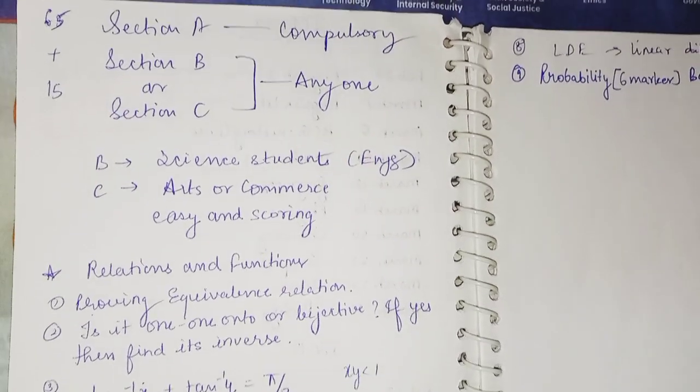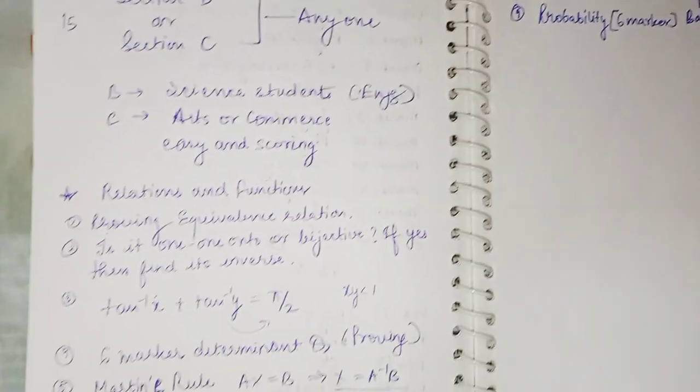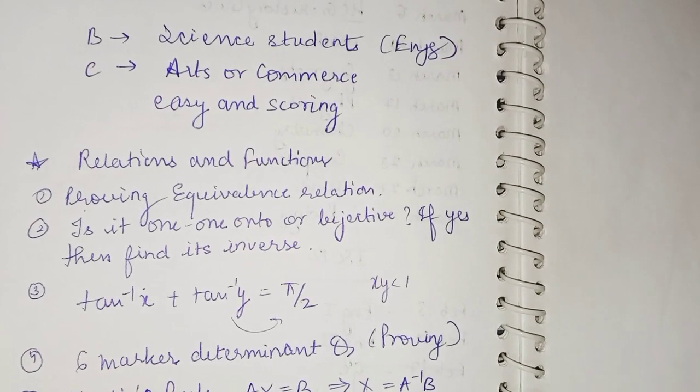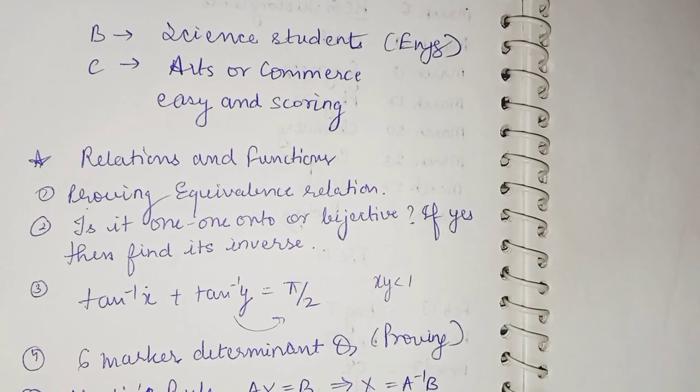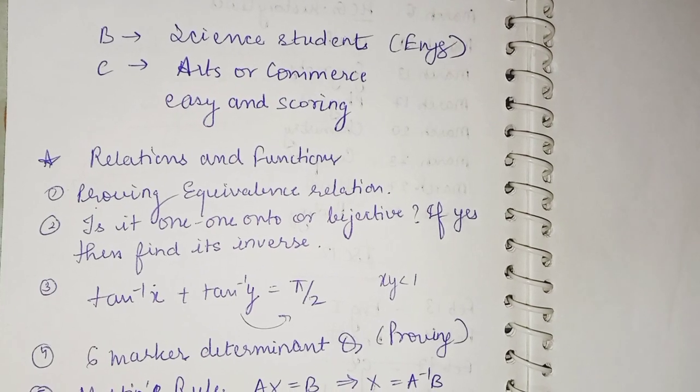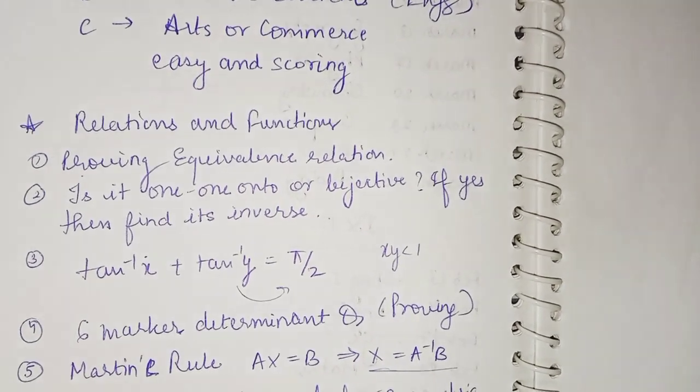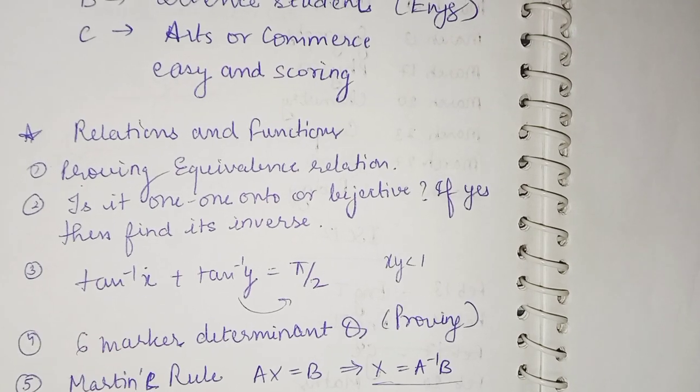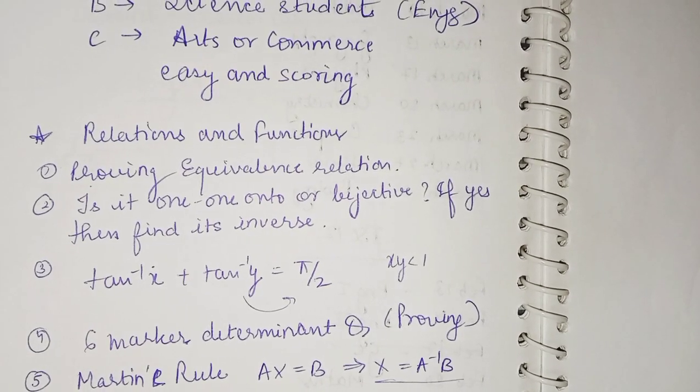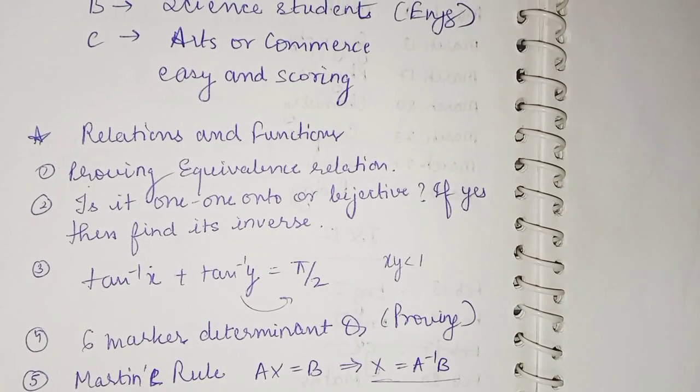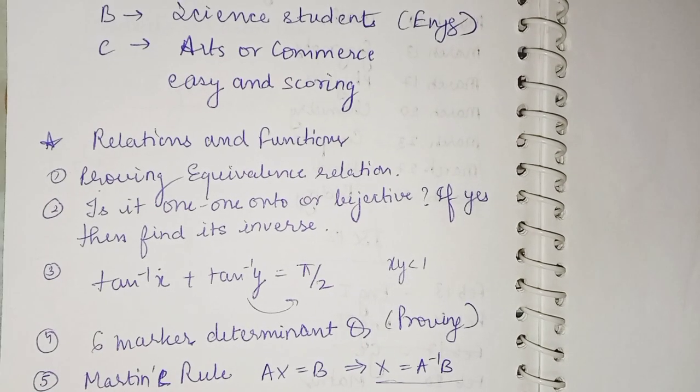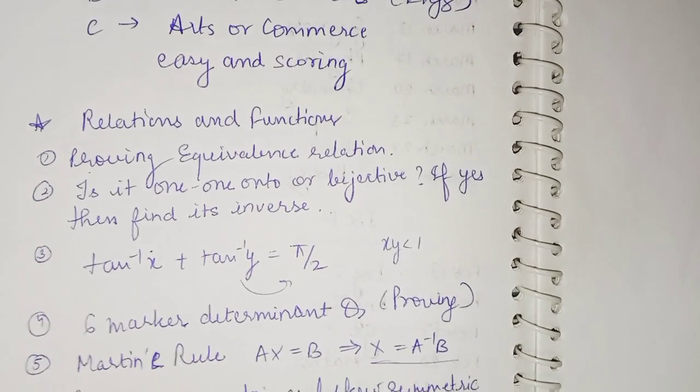I will start with important questions. In relations and functions, a question that is asked every year is proving equivalence relation, that is reflexive, symmetric, and transitive. The second question is if the function is one-one, onto, or bijective. If yes, then find its inverse. Co-domain equal to range is what is called a bijective function.